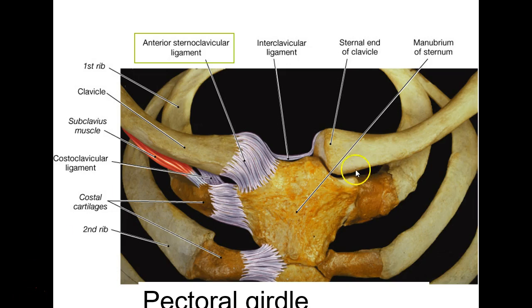Here's a hint for ligaments: if you can't remember the name, just name the two bones it connects and you'll often get it right. For example, if it connects the clavicle to the sternum, just say sternoclavicular ligament — and you'd be correct. They divide this one into anterior and posterior, but if I point at it just say sternoclavicular ligament and I'm happy.